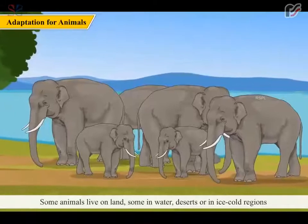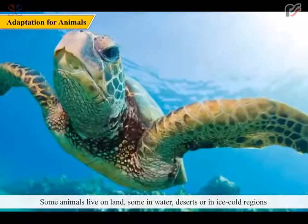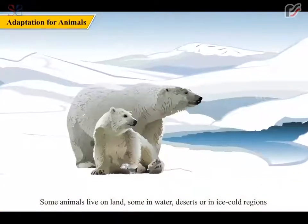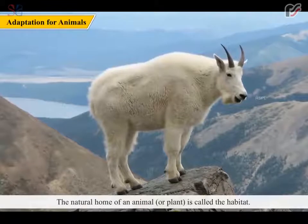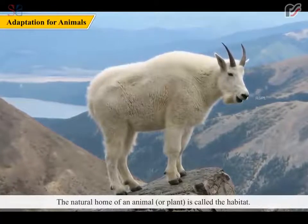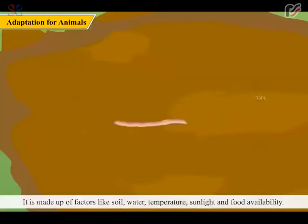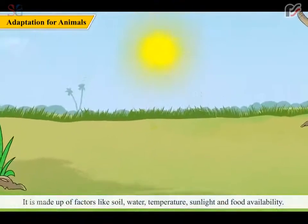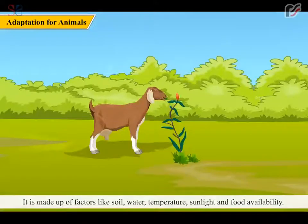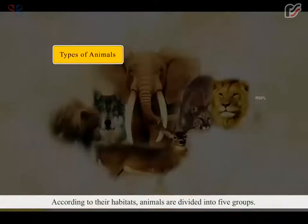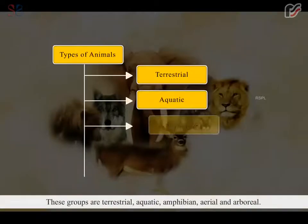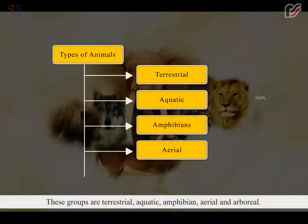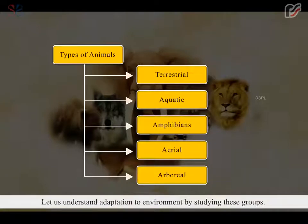Some animals live on land, some in water, deserts, or in ice-cold regions, and some on mountains. The natural home of an animal or plant is called the habitat. It is made up of factors like soil, water, temperature, sunlight and food availability. According to their habitats, animals are divided into five groups: terrestrial, aquatic, amphibian, aerial and arboreal. Let us understand adaptation to environment by studying these groups.